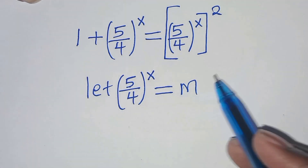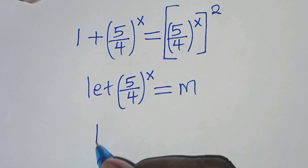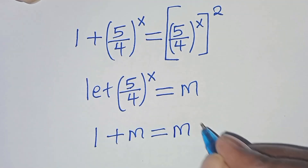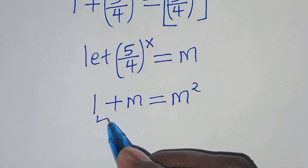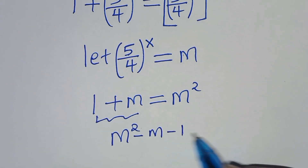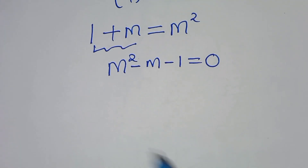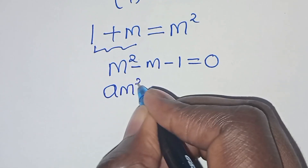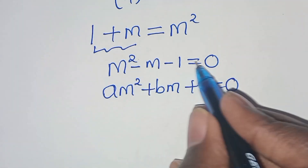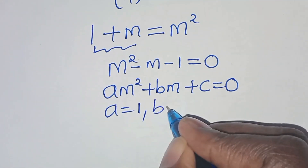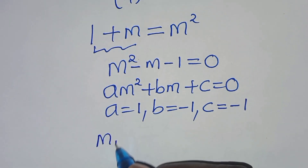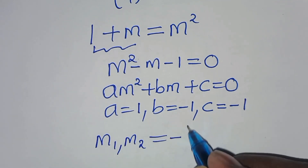Substituting m where we have (5 over 4) raised to power x, we get 1 plus m equals m squared. Taking 1 plus m to the right-hand side, we have m squared minus m minus 1 equals 0.